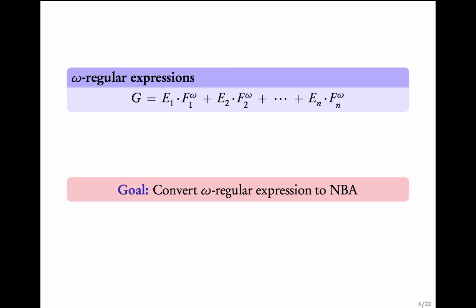The goal of this module is to convert a given omega regular expression to an NBA. An omega regular expression defines some language, and we want to get a non-deterministic Büchi automaton for that same language.